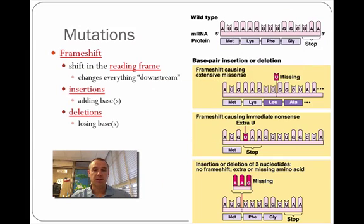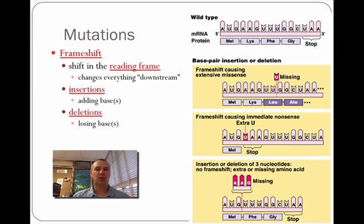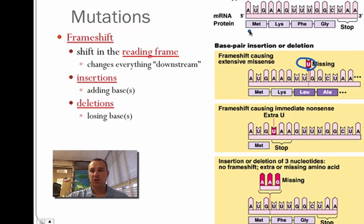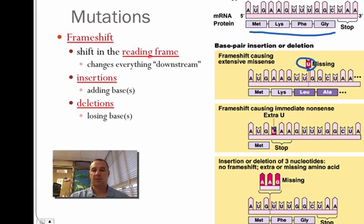There are other mutations called frameshift mutations, in which a base is either added or deleted, causing the whole sequence to shift down one nitrogen base. These are usually more dangerous because they affect every amino acid that follows. It can cause a protein to never stop being made, or to stop too early. Looking at the example on the right, a U has been inserted — the normal sequence reads methionine, lysine, phenylalanine, glycine, but after the insertion it becomes methionine, lysine, leucine, alanine, and continues to differ. You could also have an insertion or deletion of three nucleotides, which shifts everything down.